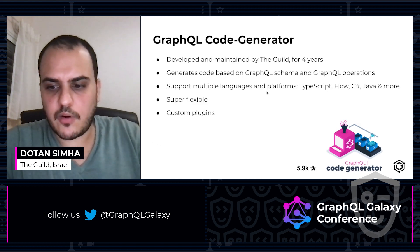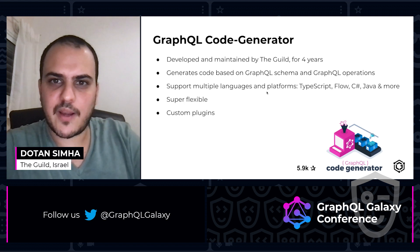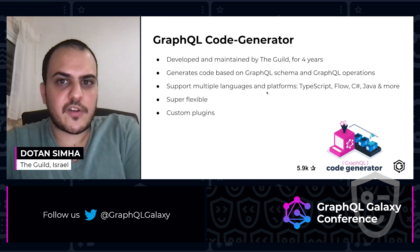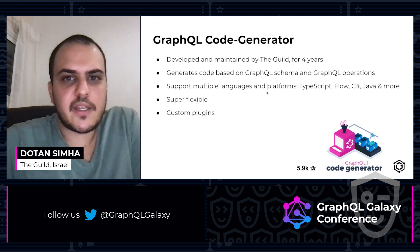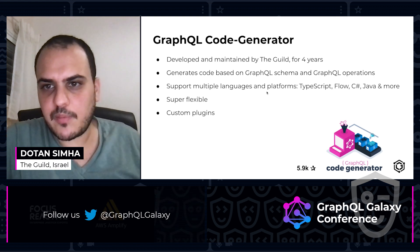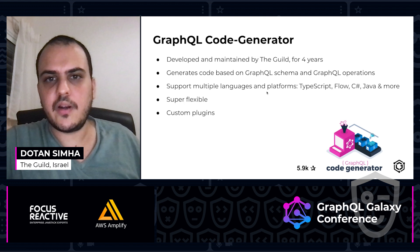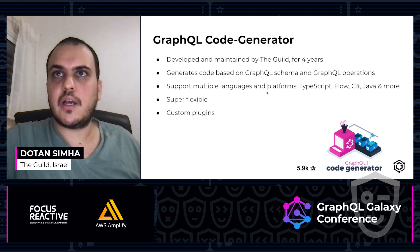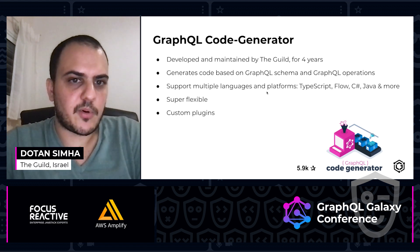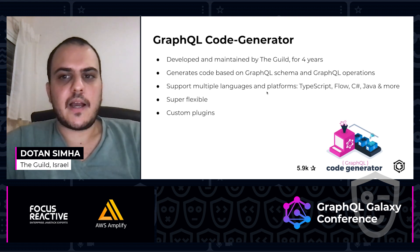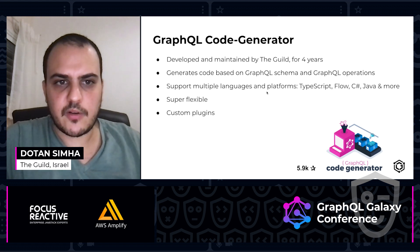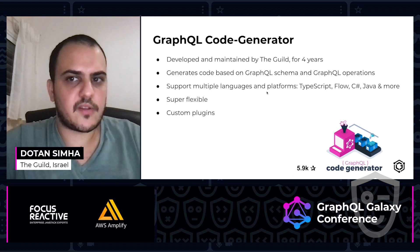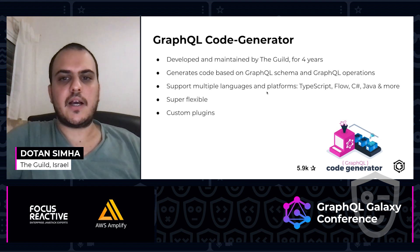A few years ago I had issues with GraphQL and TypeScript, so I started a small open source project called GraphQL Codegen. This was four years ago, and today we have a huge community. We're not generating only TypeScript — it's also Flow, C-Sharp, Java, and much more. And we're generating more than just types; we're generating actual code that can help you improve your developer experience and type safety. Codegen is a very flexible tool — you can write your own plugins, configure the output, and hook into the generation process to add your own code.